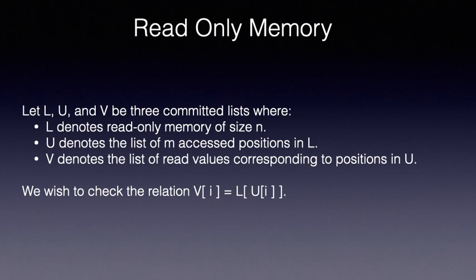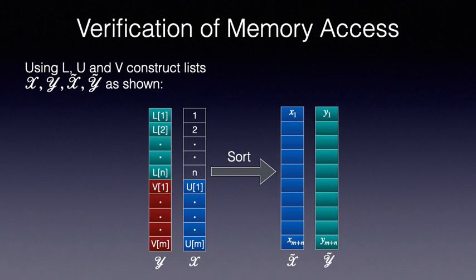Our verifiable decision tree inference relies on efficient read-only memory abstraction. So we state it first. In this we are given three committed vectors L, U and V, where L denotes the read-only memory of size N. U denotes the positions of L that are accessed. We call U the access pattern. Let's call U to be of size M. While V denotes the vector of values read from L for positions in U. That is V of I is L accessed at U of I.